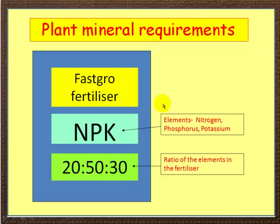A farmer might order a specific fertilizer. Here is a bag of fertilizer — if you look at these bags, you'll see three symbols: N, P, and K. These stand for the elements nitrogen, phosphorus, and potassium.